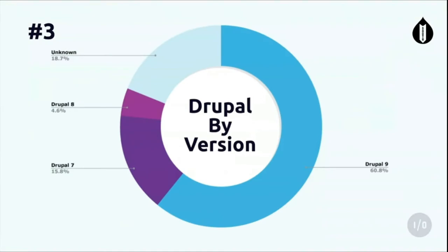Bonus graph - this is Drupal by version, where I can find the version. This is just major version only. Roughly more than half on Drupal 9, which is pretty good. Drupal 7 - you can't kill that either. Drupal 8 is not in support, accounting for 4.6% of sites.